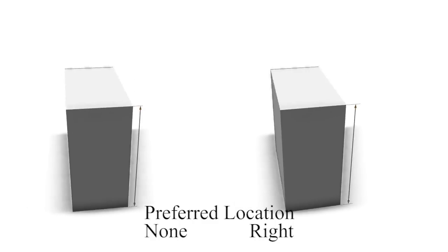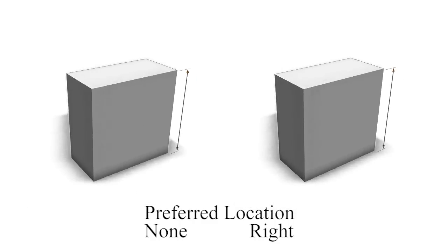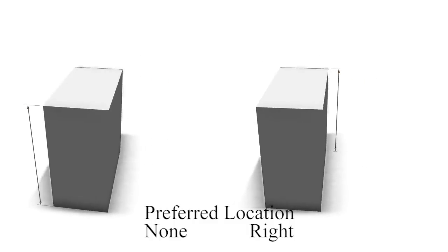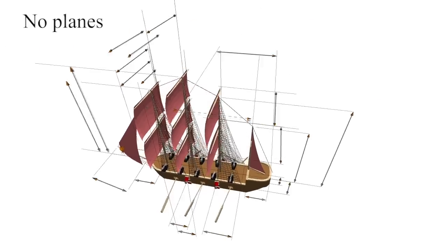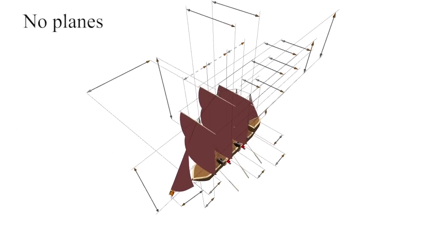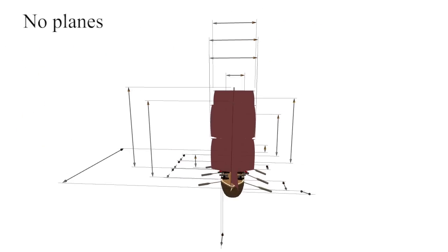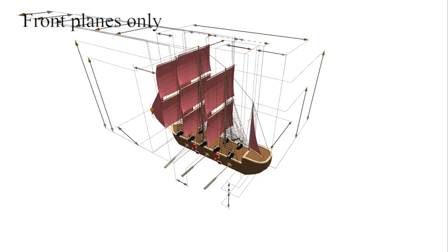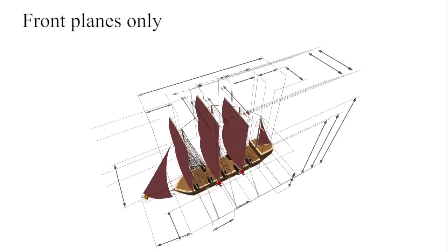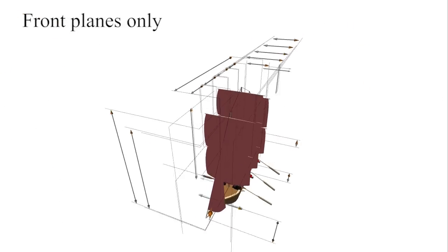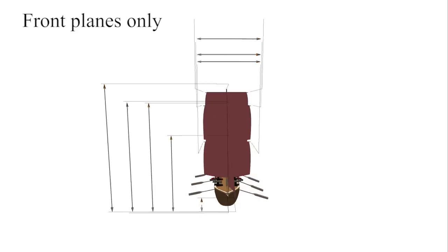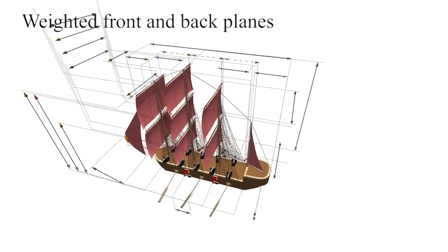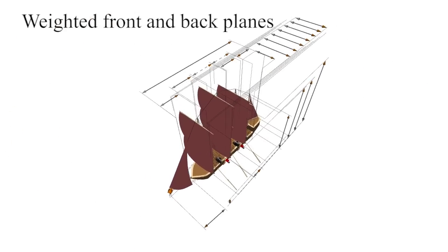The alignment property gives additional control over the handles. Without the object planes, the positioning of the dimension lines is messy. Here we only use front-facing planes. Finally, we see the results of front- and back-facing planes used together.